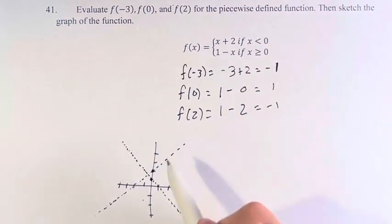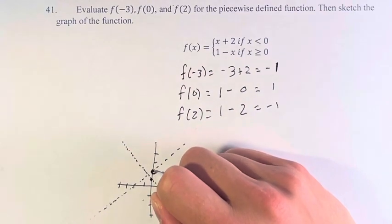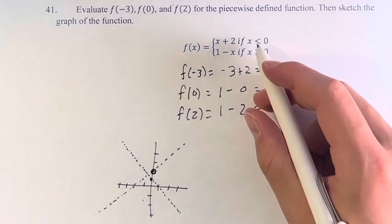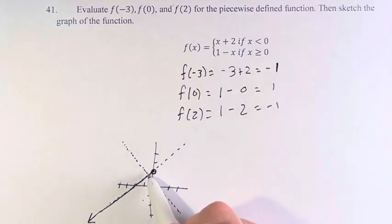x plus 2, this line, is valid if x is less than 0. So we start at x equals 0 and draw an open circle, because it's not including 0. And then that is the part of the plane where it's valid, x is less than 0.